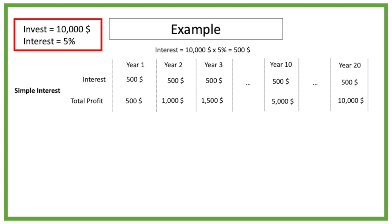The profits earned from this investment can be used by the investor in anything he wants. This was an example of simple interest, which means that every year we get paid 5 percent or 500 dollar of our initial investment. Let's now look what happens with compound interest.